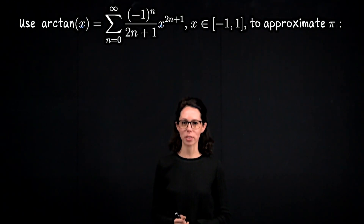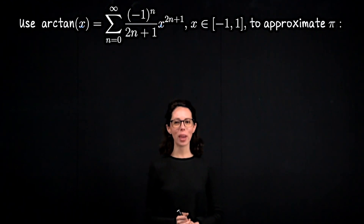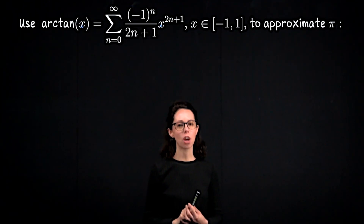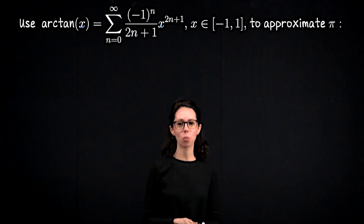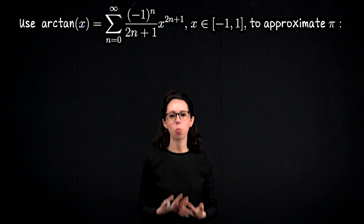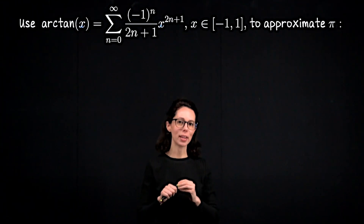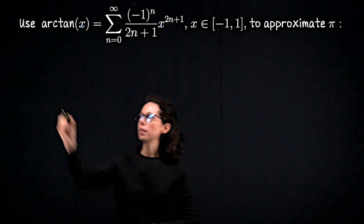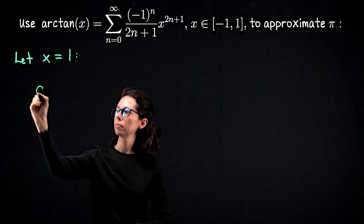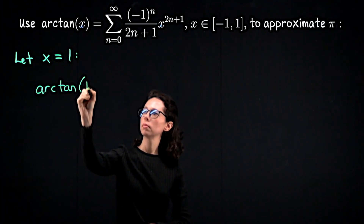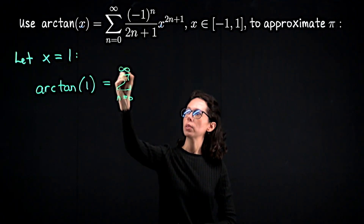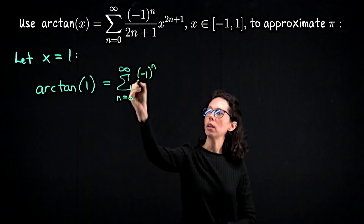One neat application of this power series representation for f of x equals arctan of x is that it gives us a way to approximate the value of pi. We know that arctan of x has this power series representation on the domain from negative 1 to 1 including the right endpoint 1. Plugging in x equals 1 is convenient because 1 to the 2n plus 1 is always 1, so it turns into a simple series. Let's plug x equals 1 into both sides: on the left we'll have arctan of 1, and on the right we'll have the sum from n equals 0 to infinity of negative 1 to the n over 2n plus 1.